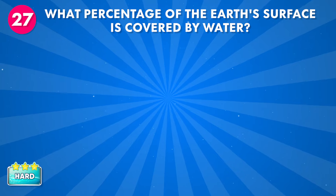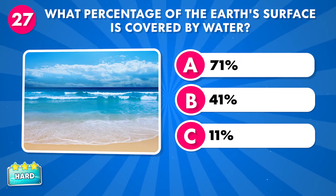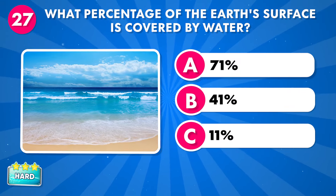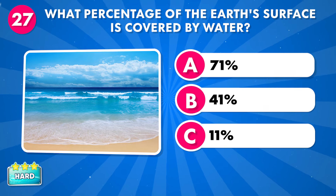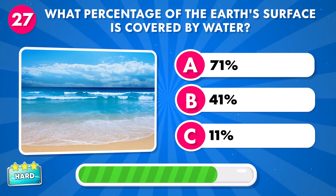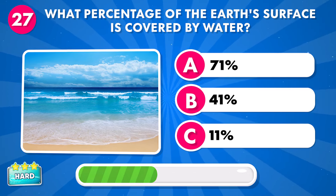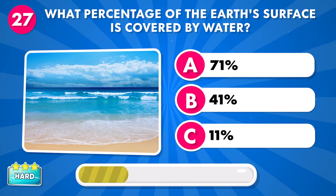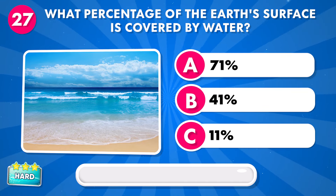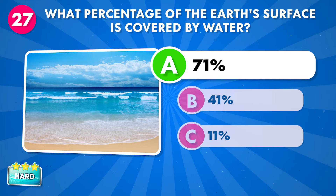What percentage of the Earth's surface is covered by water? A: 71 percent, B: 41 percent, C: 11 percent. It's 71 percent.